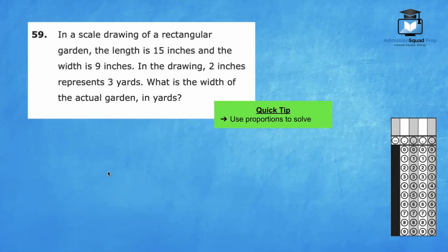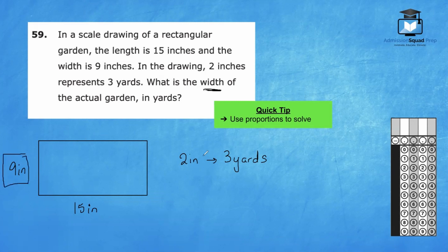Number 59. In a scale drawing of a rectangular garden, the length is 15 inches and the width is 9 inches. In the drawing, 2 inches represents 3 yards. What is the width of the actual garden? Let's set up a diagram. In the drawing, the length is 15 inches and the width here is 9 inches. They let us know that 2 inches represents 3 yards. Since we're trying to find the width of the actual garden, we will be more focused on the number 9 inches. So if 2 inches is equivalent to 3 yards, we have 9 inches is equivalent to x yards. We can use a proportion to solve.